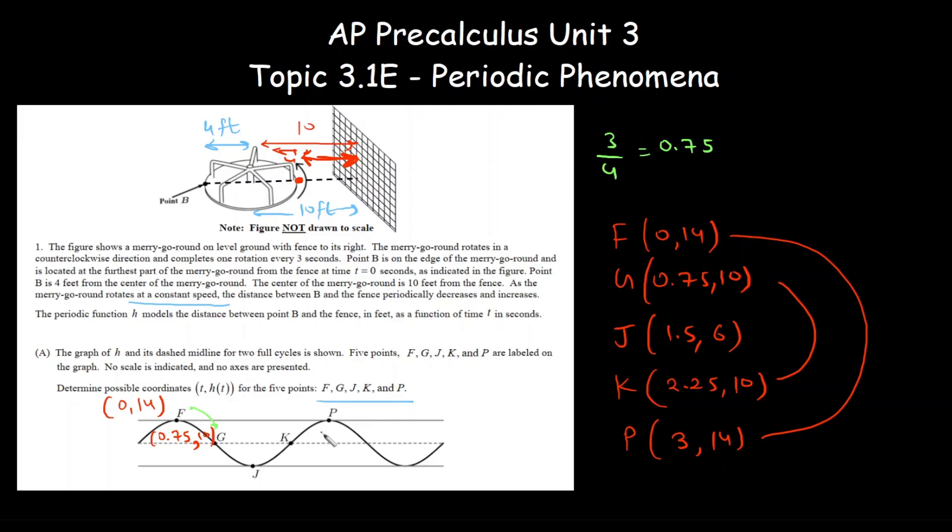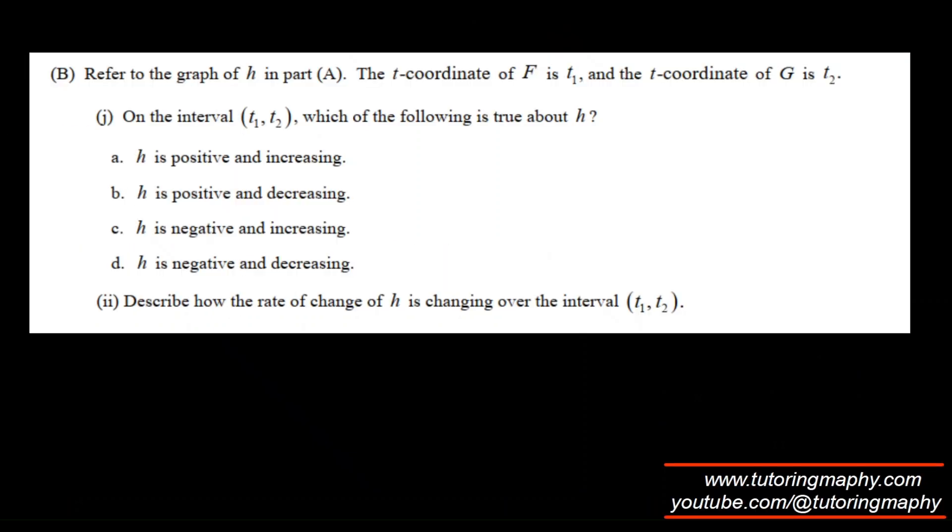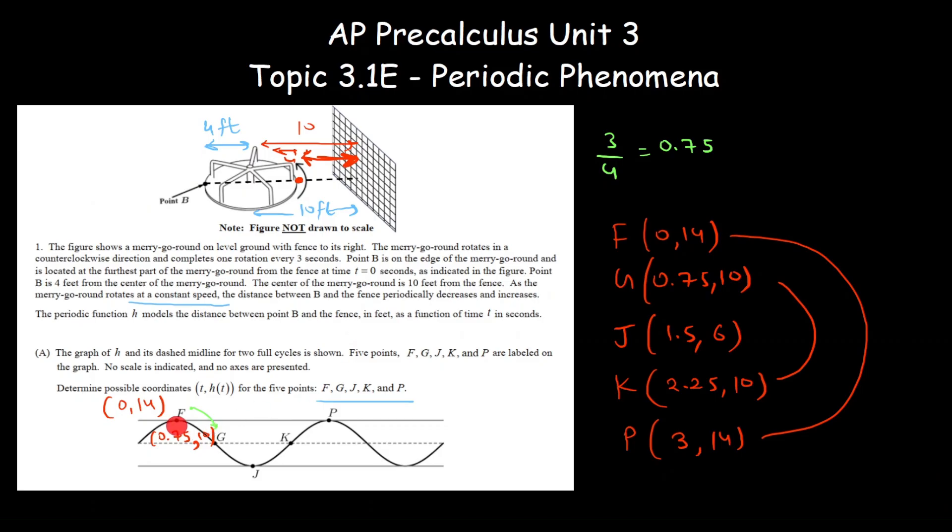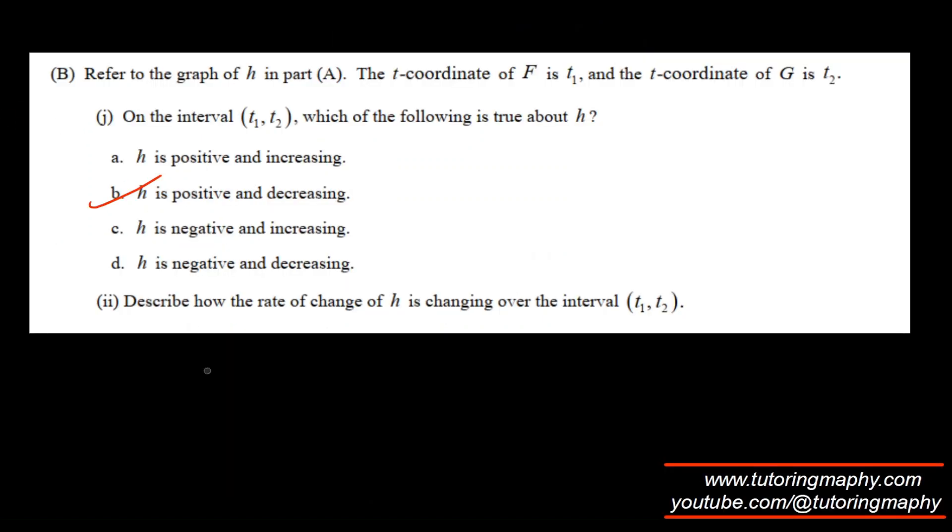F and G is clearly positive, nothing is going negative, but it is decreasing as well. So positive and decreasing will be option B. What is the rate of change? Clearly between F and G it is concave down, so concave down means ROC is decreasing.